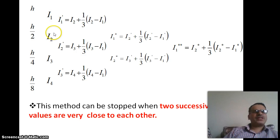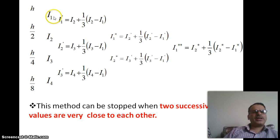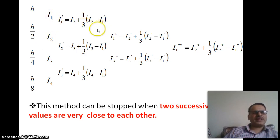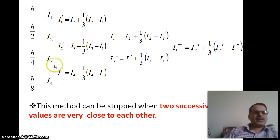Just as we have seen forward difference table, backward difference table, and central difference table, here we build the Romberg integration table. We find I1 dash, and I2 dash is: I2 plus 1/3 of (I2 minus I1). Similarly, I2 dash is: I3 plus 1/3 of (I3 minus I1), and I3 dash is: I4 plus 1/3 of (I4 minus I1).